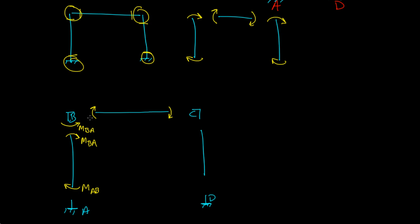And again, at joint B, on member BC, you have this moment going clockwise. So that means on this joint, the moment's going to be going counterclockwise, right? Equal and opposite. Equal magnitude, opposite direction. So this is M_BC.